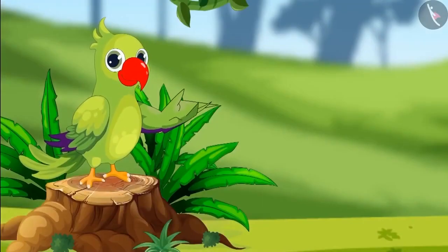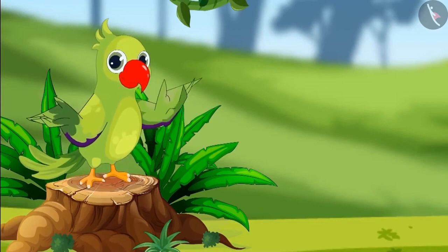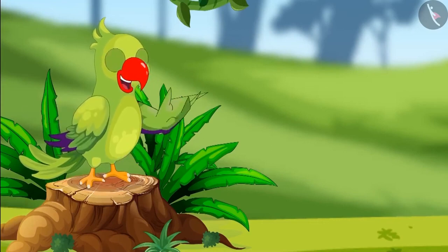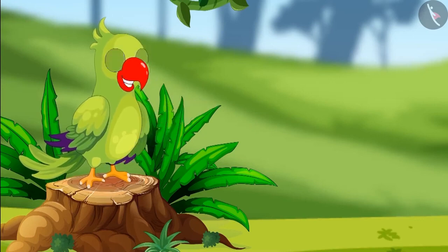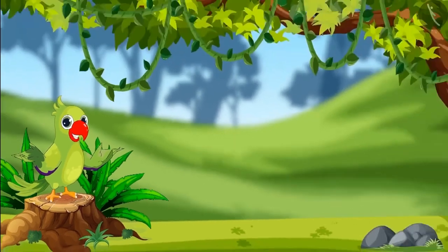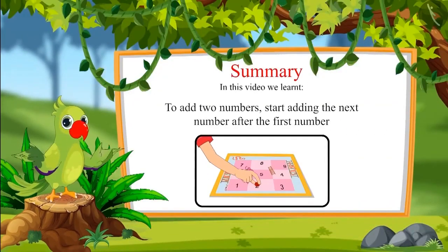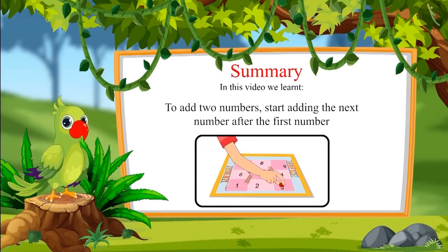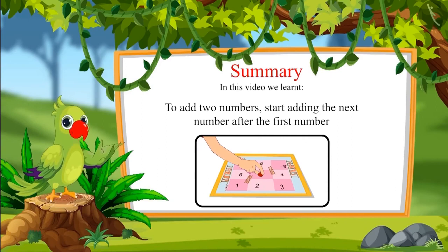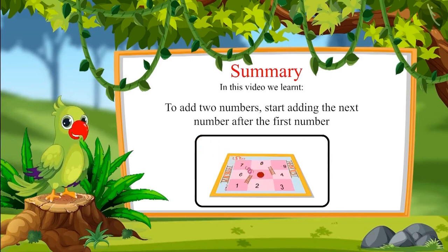Children, I hope you had fun watching the game of snakes and ladders. You can now add 2 numbers like Chotu and Pinky! In this video we learnt that to add any 2 numbers, we need to start adding the next number after the first number. I hope you have understood this topic properly. Goodbye friends!